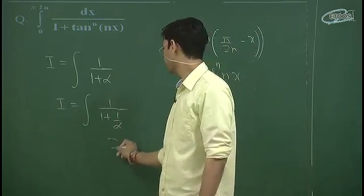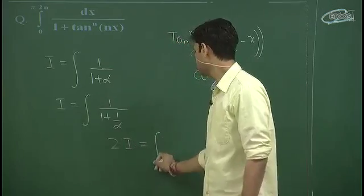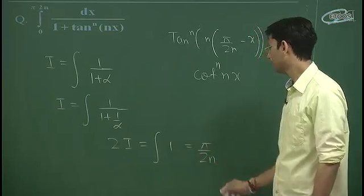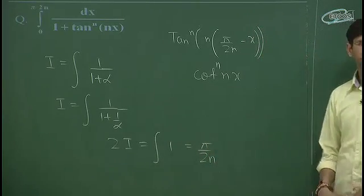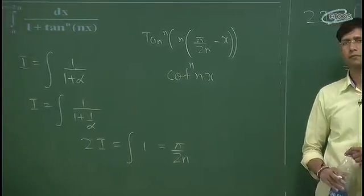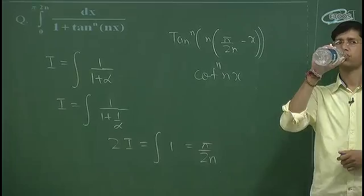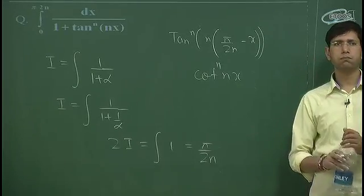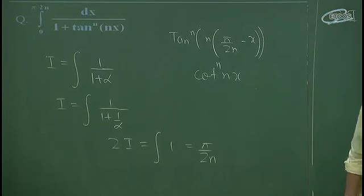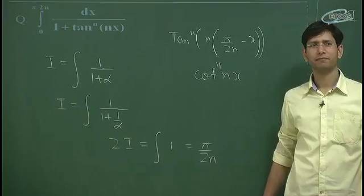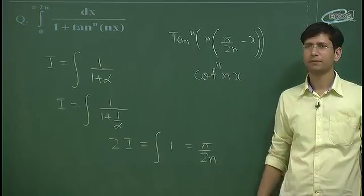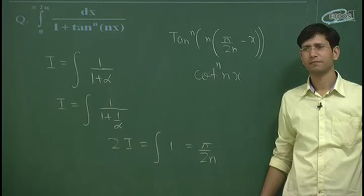So, I plus I, we get 2I = integration of 1. Difference of limits is π/(2n). So your answer is π/(4n). So your answer will be π/(4n). Thank you.